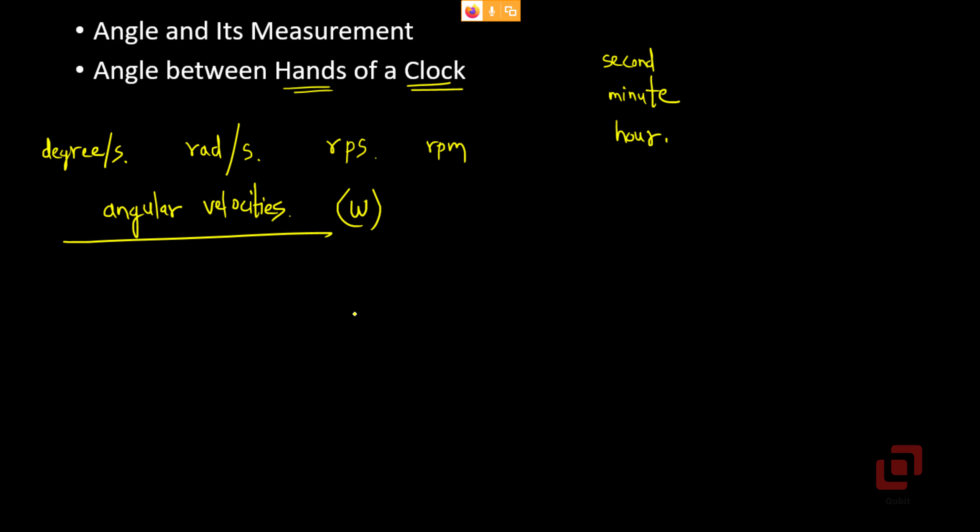Let us start with the second hand. What does the observation tell us? The observation tells us that second hand covers 360 degrees in one minute. So what will the angular velocity be? It will be 360 degrees in 60 seconds. That is 6 degrees per second.